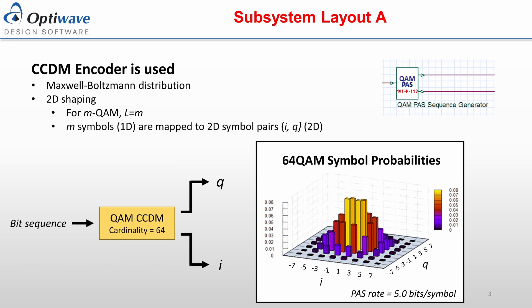Similarly to the PAM pass sequence generator layout A, subsystem layout A for the QAM pass sequence generator uses a CCDM encoder component directly for the output distribution. The Maxwell-Boltzmann distribution is used with two-dimensional shaping. This technique assigns a cardinality to the CCDM encoder matching the QAM format. For example, a cardinality of 64 is used for 64 QAM, and the encoder then uses these 64 symbols to generate the codeword.